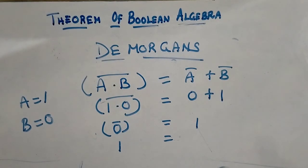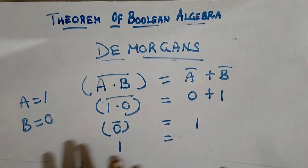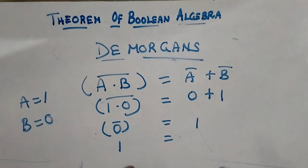The theorems of Boolean algebra given in your syllabus are this much. What is the use of these theorems and laws? To minimize the Boolean expression. We have to apply all these laws — when you apply these laws, it is very easy to minimize Boolean expressions. Thank you, children.